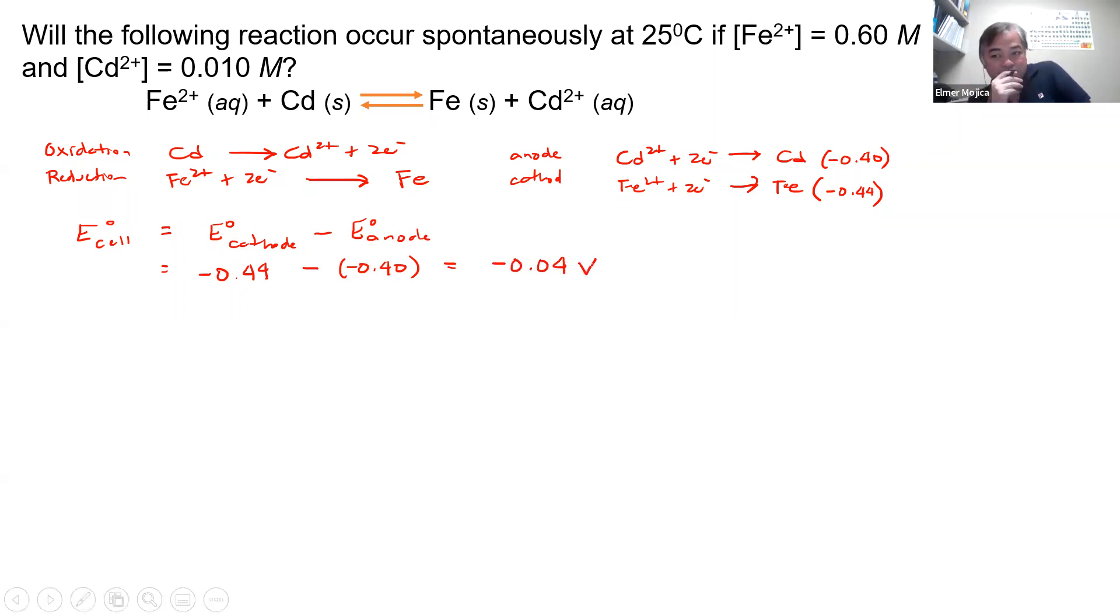So you will have around negative 0.04 volts. Now, this is a standard condition. Now, what happens if you change the reaction or the concentration? So you have E of cell equals to E cell, the standard cell potential, minus 0.0257 over N.